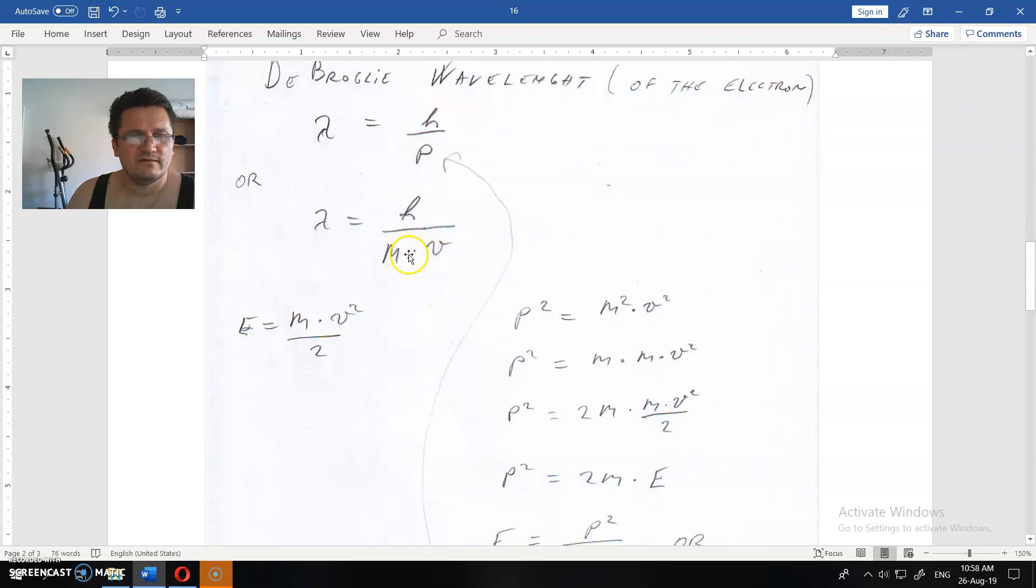But we don't have momentum, we have energy. So now we will find the relation between momentum and energy. Momentum is mass times speed or velocity. But if we square that, that will be p², m² times v².